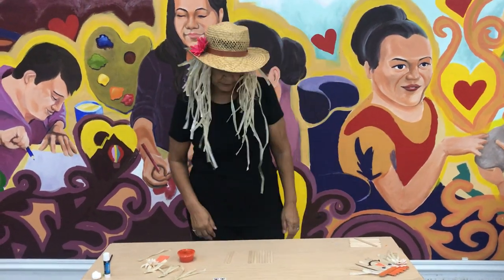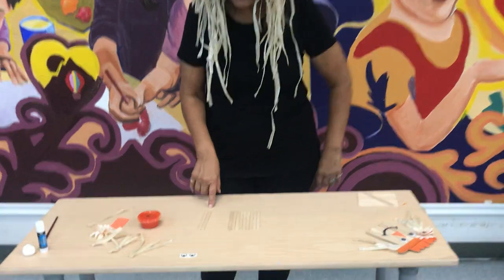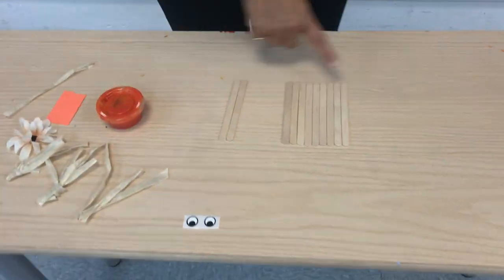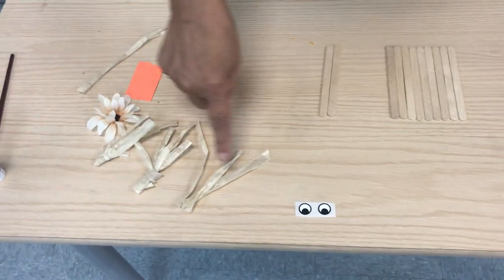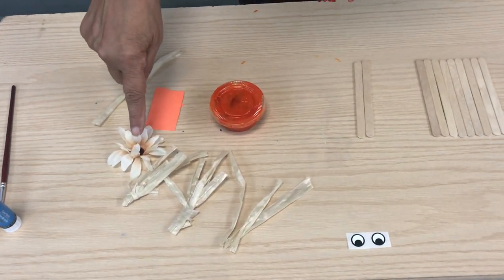In your packet you'll be receiving 11 popsicle sticks. En su paquete van a recibir palitos de madera. Two eyes. Ojos. Some straw. Raffia. Flower. Una flor.